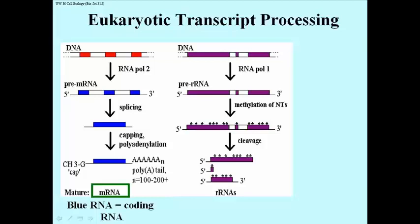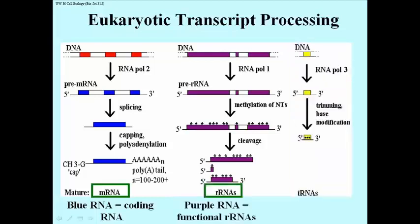That accounts for three of the four eukaryotic ribosomal RNA transcripts. Here are the products of transcription of RNA polymerase 3 in eukaryotes. There's the DNA, a transcript just below that catalyzed by RNA polymerase 3, and then some modifications.